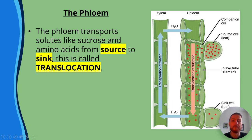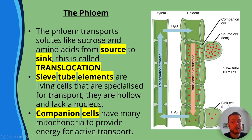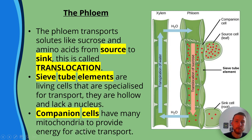Trans meaning to change, location meaning area. Sieve tube elements are living cells specialised for transport — they are hollow and lack a nucleus. Companion cells have many mitochondria to provide energy for active transport.